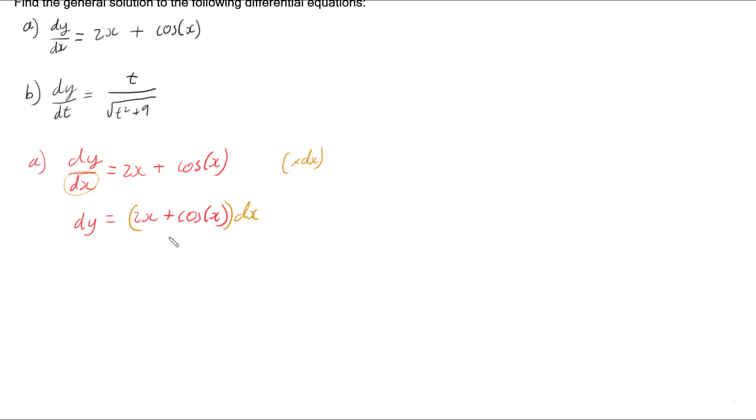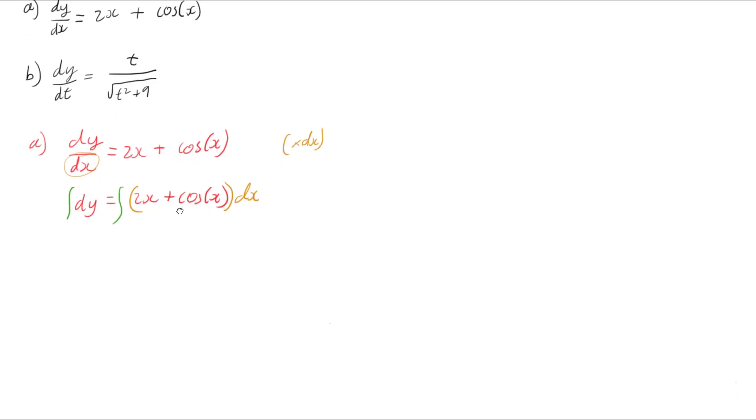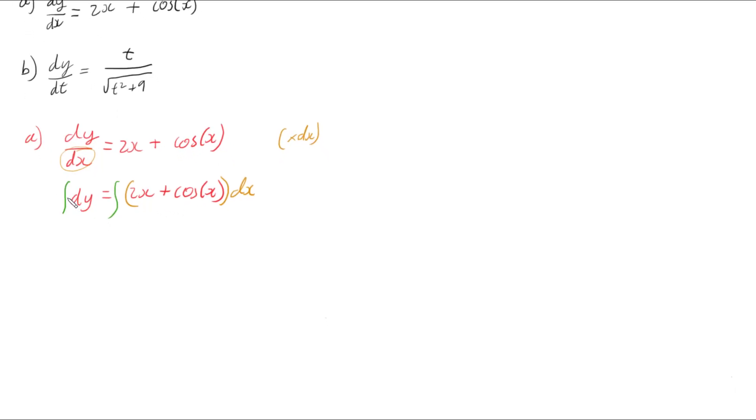And then what we can do is take the integral of both sides. So now we actually have these two integrals to sort out: the integral of dy and the integral of 2x plus cos(x) dx. So the integral of dy, well we have an invisible one in there, so the integral of 1 dy is going to be y, and that's going to be equal to the integral of 2x plus cos(x) dx.